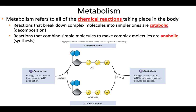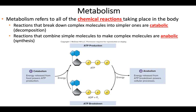So this is our introduction to metabolism. The basic definition is that metabolism is all the chemical reactions taking place in the body. Many of those reactions are generating energy, and then other reactions are using that energy. We can divide metabolism into two sides: catabolic reactions, which break down larger complex molecules into smaller molecules — and that's typically how we get ATP — and anabolic reactions, where we use that ATP to combine small molecules to form larger complex molecules.